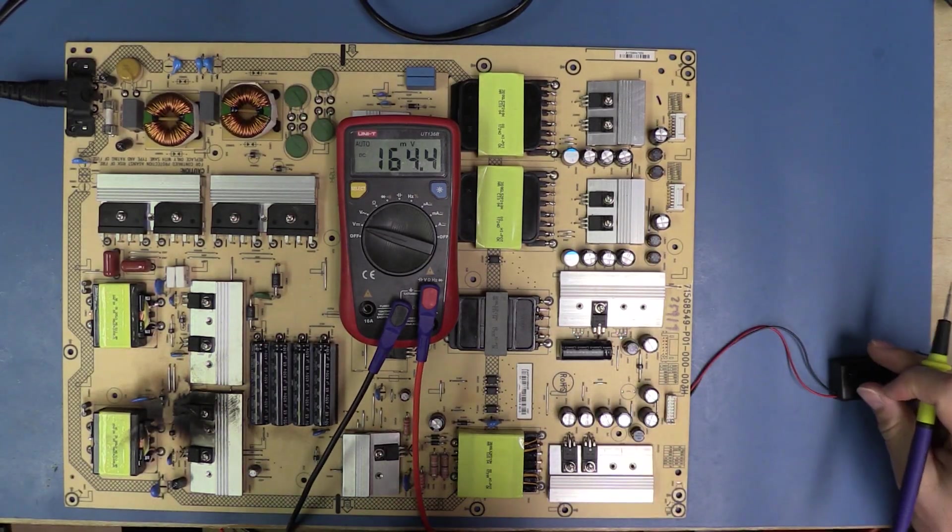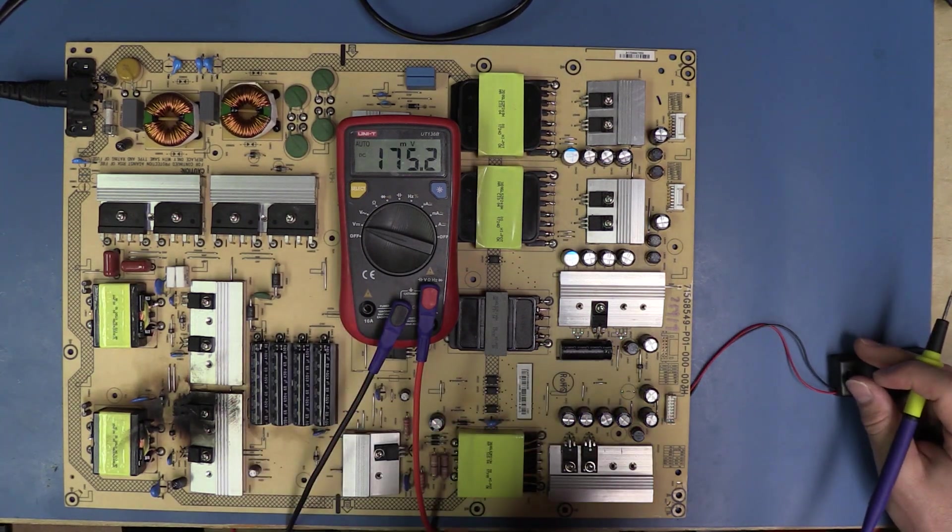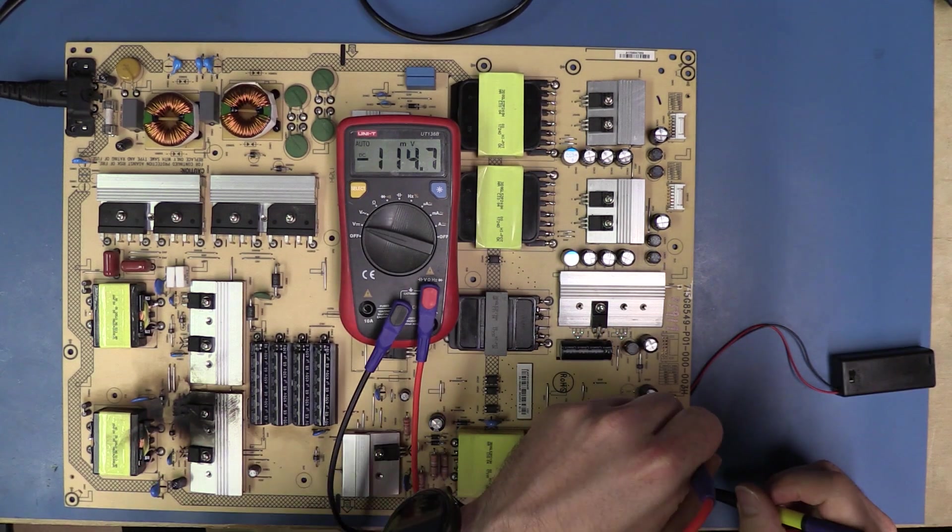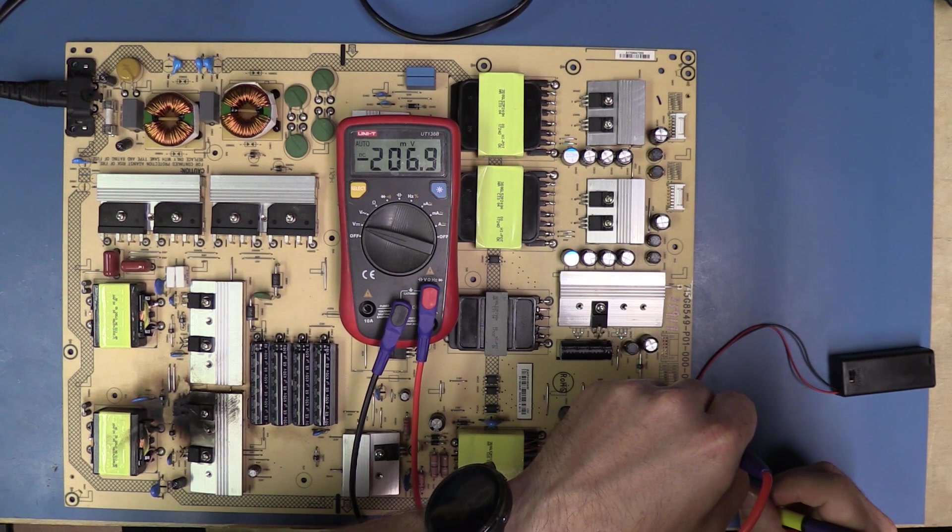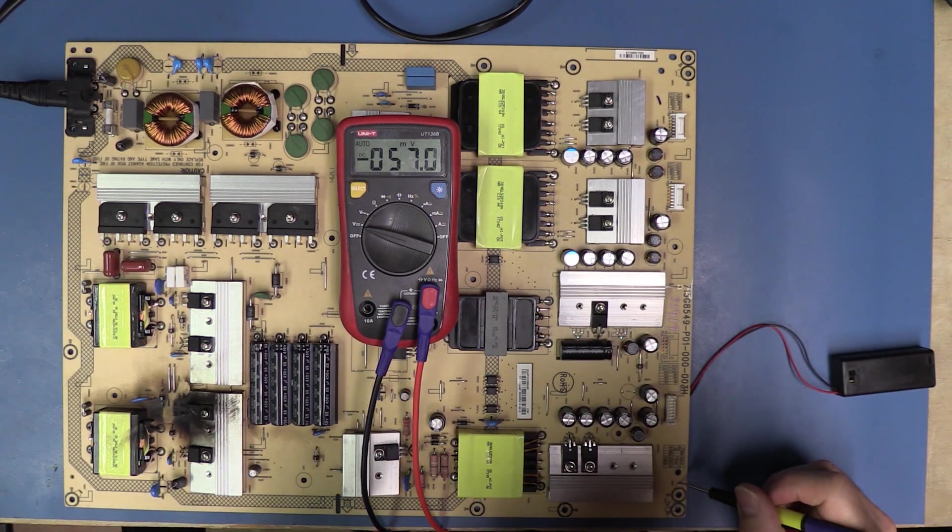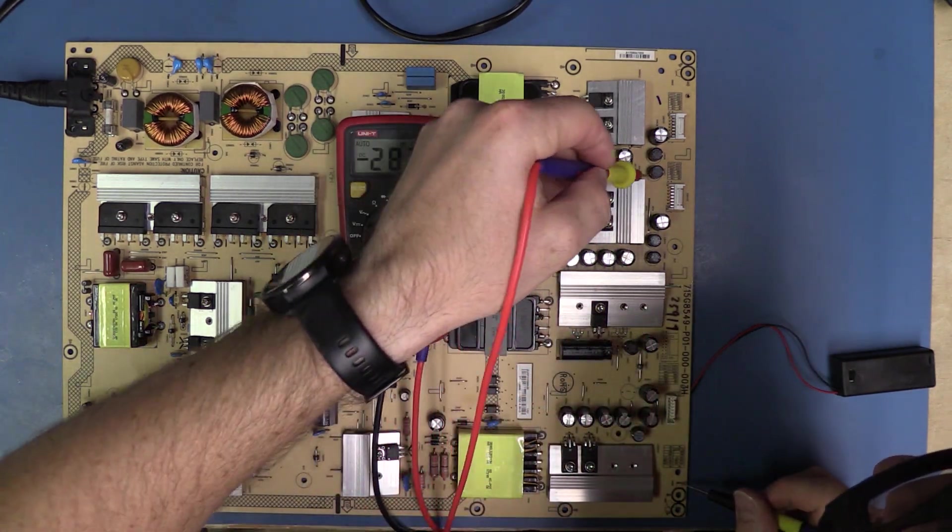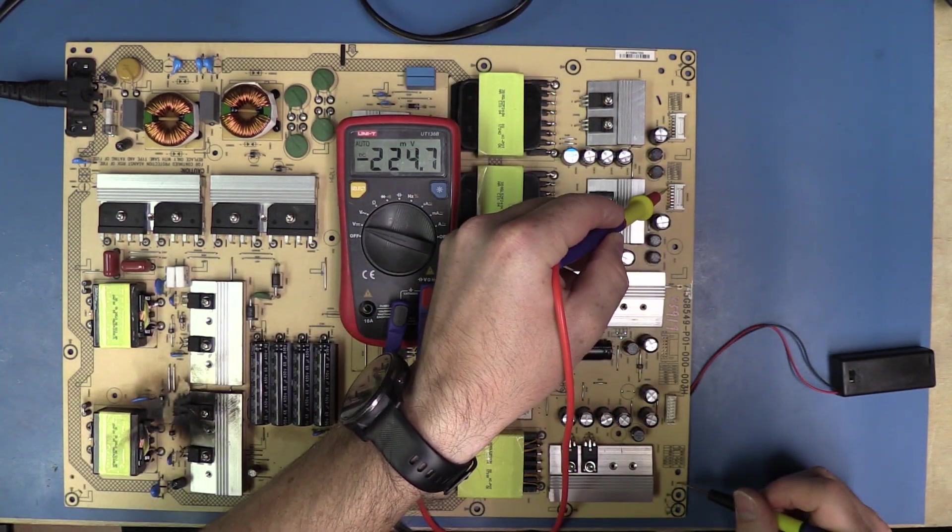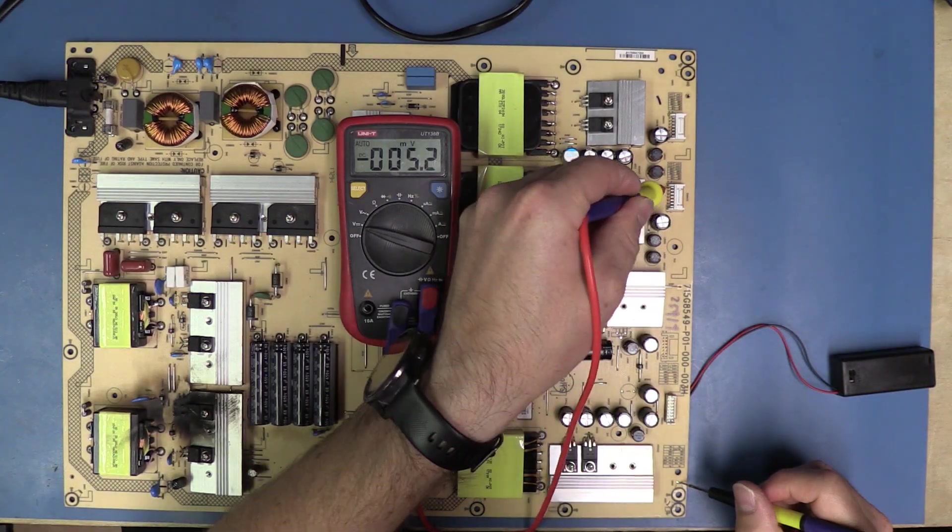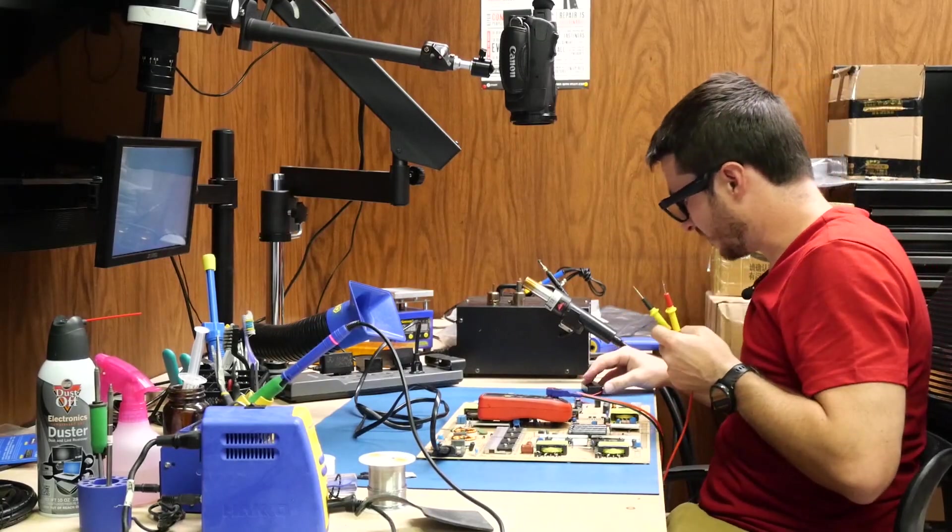In DC mode we're going to do some very quick voltage checks. This one is our 19 volt line and we are getting 19 volts. Let's check our 24 over here. We do not have our 24 volts which we do need that. Let's go ahead and turn it off.